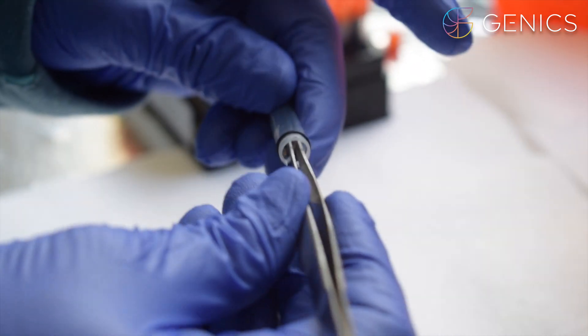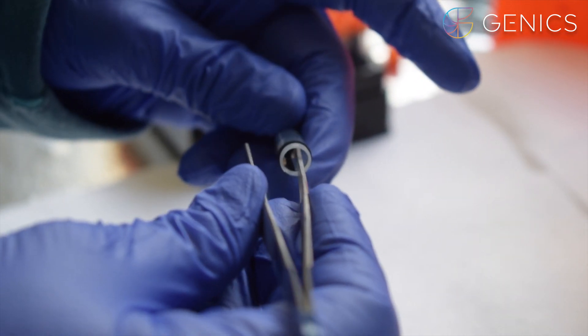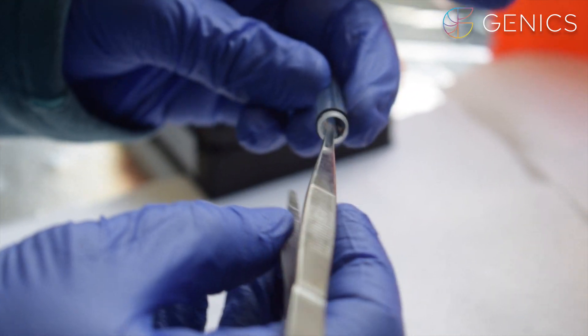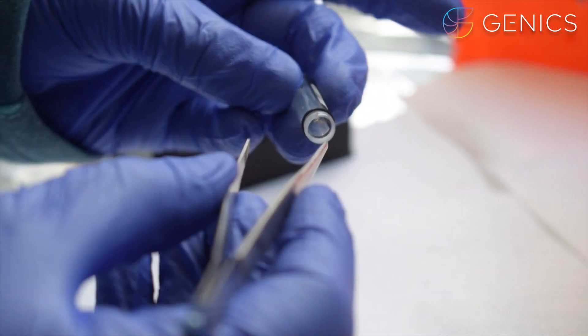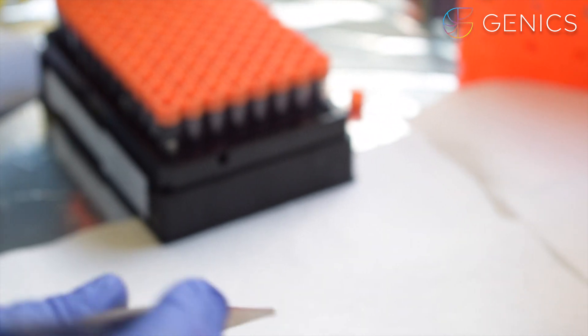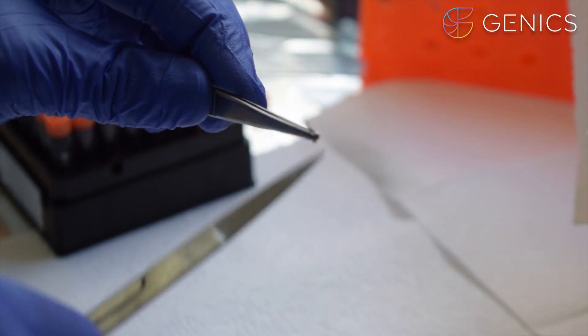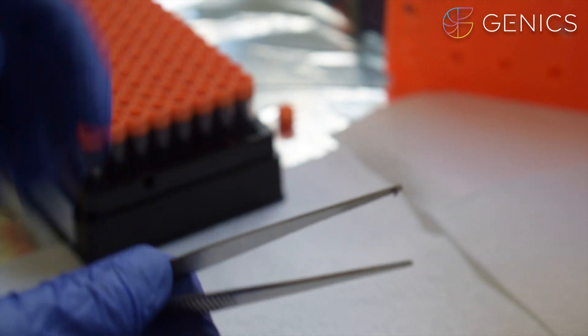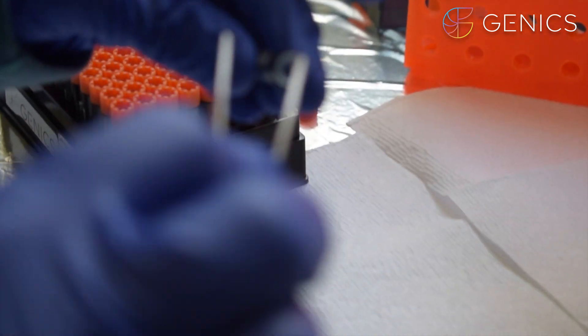But when we change tubes to make another pooled sample we do need to sterilize our scissors and tweezers and put out fresh sample equipment. If you'd like to see an easy explainer video on how to sterilize your scissors and tweezers please visit the educational section of our website genix.com.